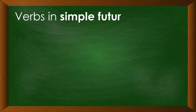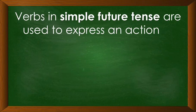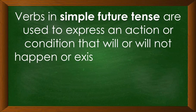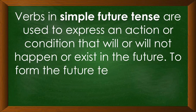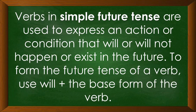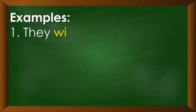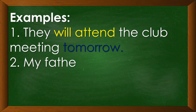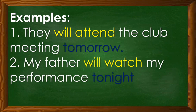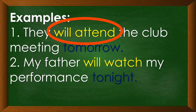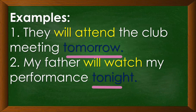Verbs in simple future tense are used to express an action or condition that will or will not happen or exist in the future. To form the future tense of the verb, we just have to use the word will plus the base form of the verb. Examples: Number 1 — they will attend the club meeting tomorrow. Number 2 — my father will watch my performance tonight. The verb in the simple future tense is will attend because the action will happen tomorrow and tonight.